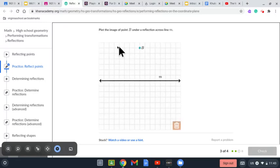Here, we have to plot the image of point B under a reflection across line M. Across line M. So here. We have to do it. Let's count how many boxes.